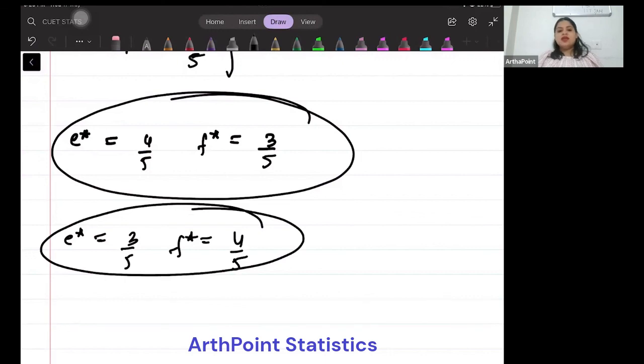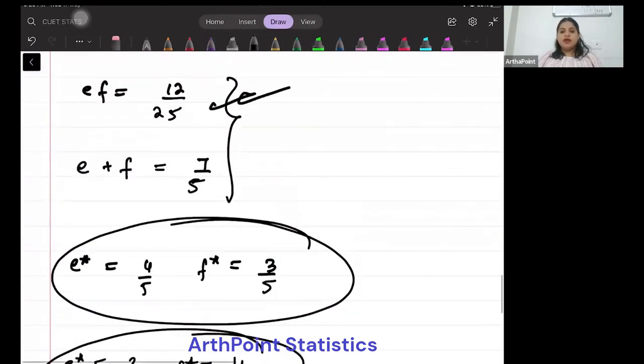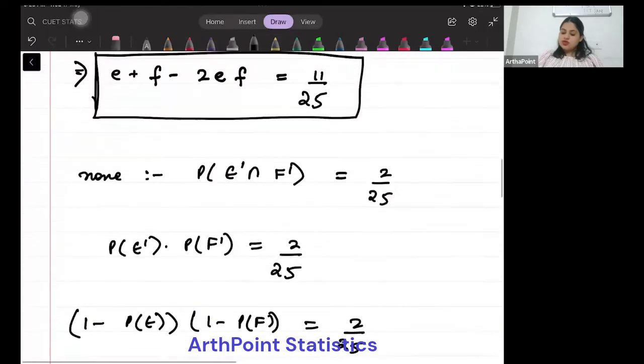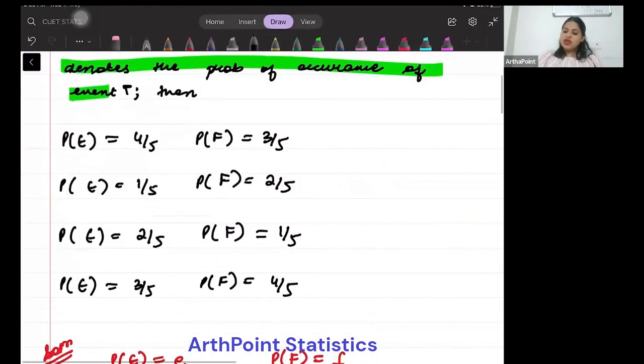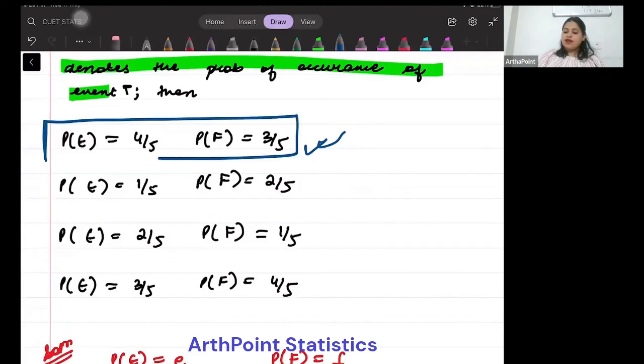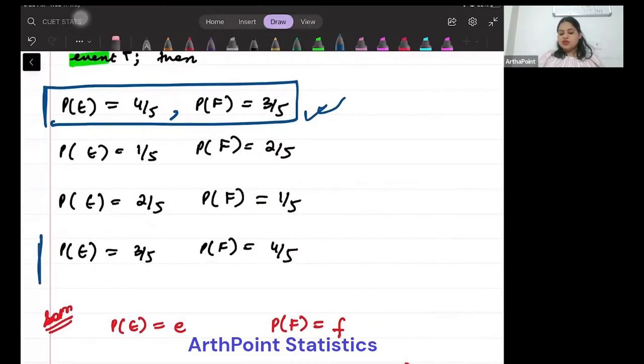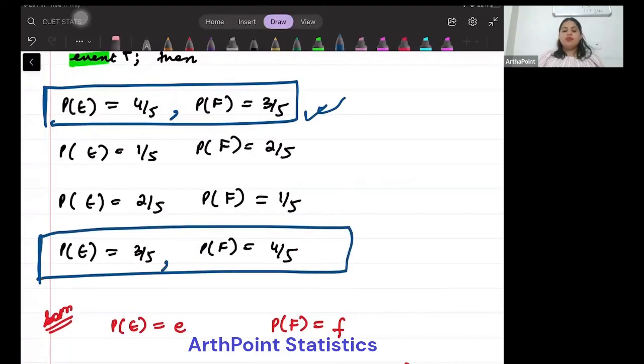So the answer to this question is going to be A: 4 by 5, 3 by 5. Actually speaking, this is also correct: 3 by 5 and 4 by 5. So both these answers are correct, A also and D also. They are the correct answer to this question. Is this clear? Thank you.